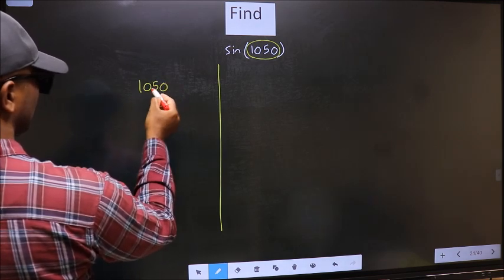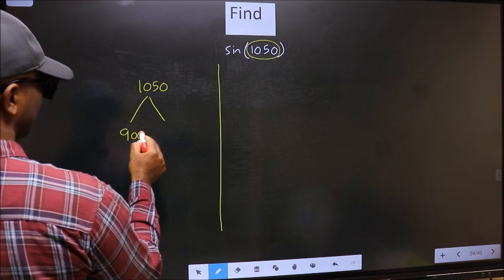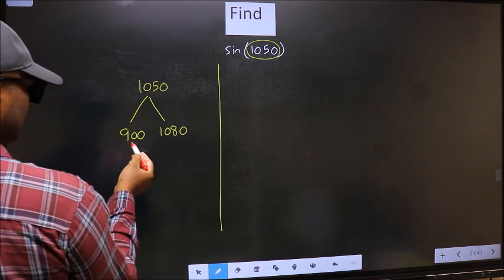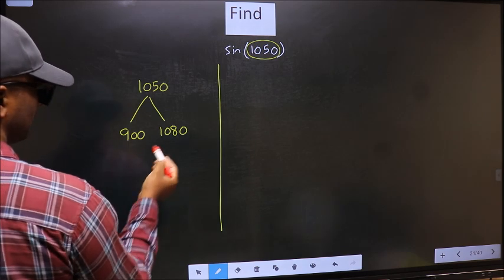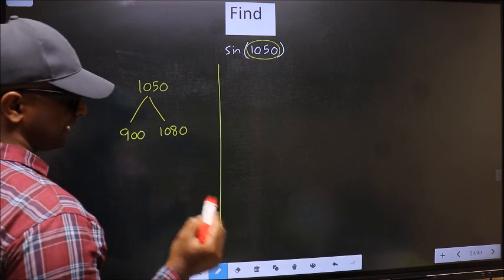1050 lies between 900 and 1080. This is 180 × 5 and this is 180 × 6.